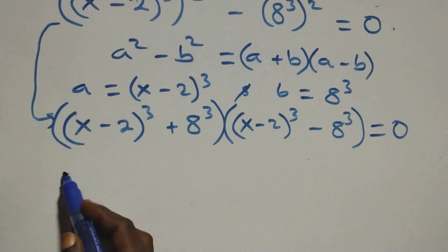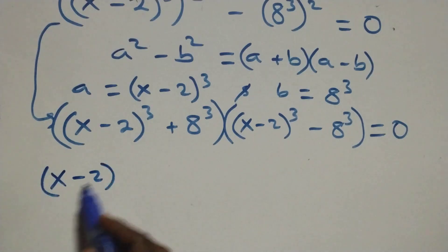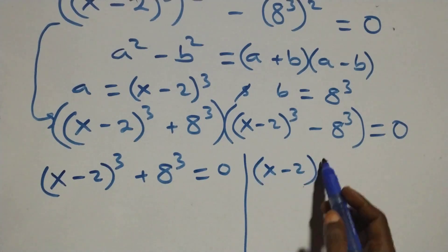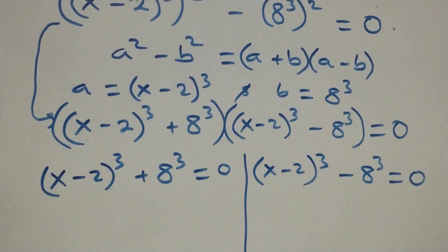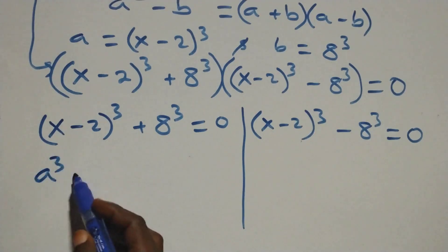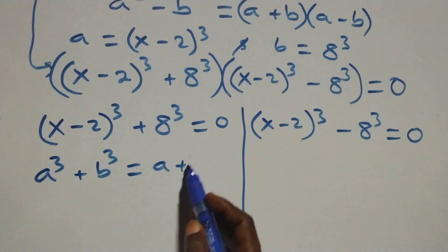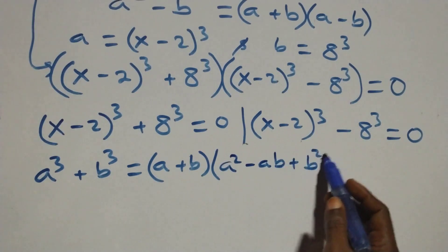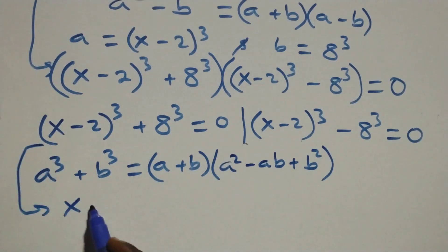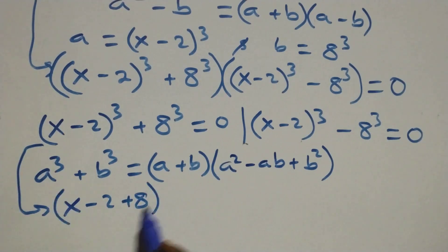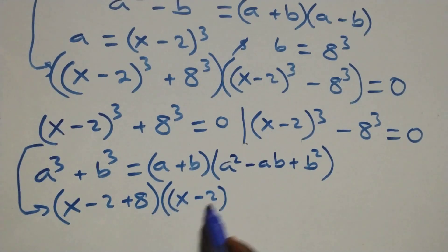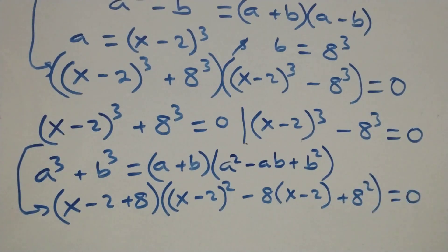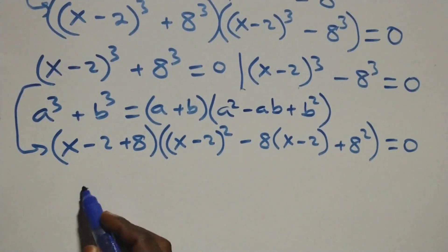We have two possible cases: (x − 2)³ + 8³ = 0, or (x − 2)³ − 8³ = 0. For the first case, this follows when a³ + b³ = (a + b)(a² − ab + b²). So applying that identity, the bracket simplifies to (x − 2 + 8), which gives us (x + 6).